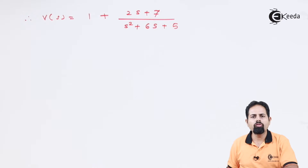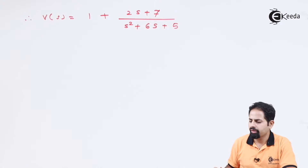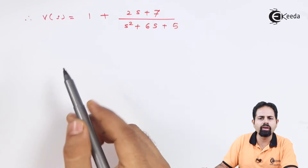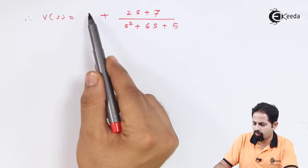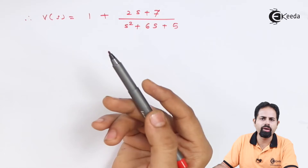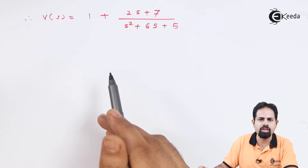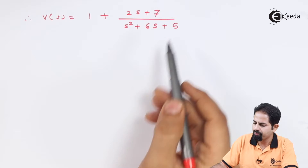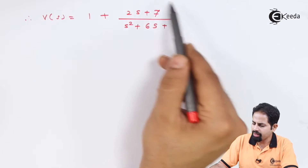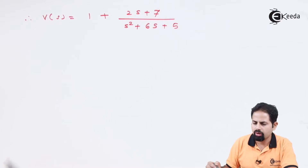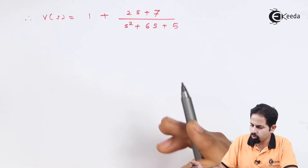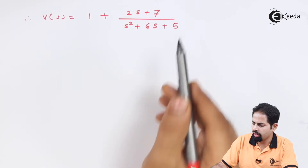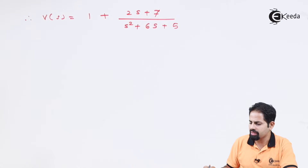Now we can find the residues. The first term is only one, so the inverse Laplace transform of this one is going to be delta t, which is the impulse signal. And the main question for us is 2s plus 7 upon s squared plus 6s plus 5.